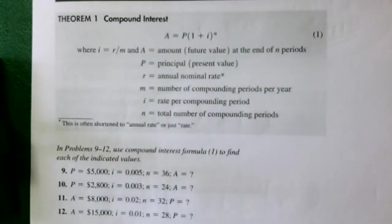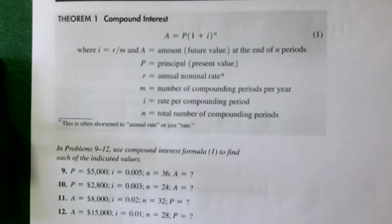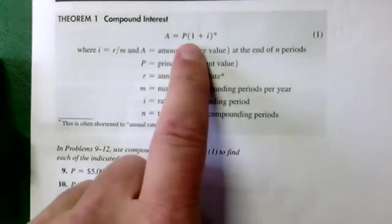If you take into consideration all that compounding, what is the real simple interest rate — the annual percentage rate — in one year? It goes up slightly from 14%, which is the advertised amount. It might go up to something like 14.2%. But here are the formulas.